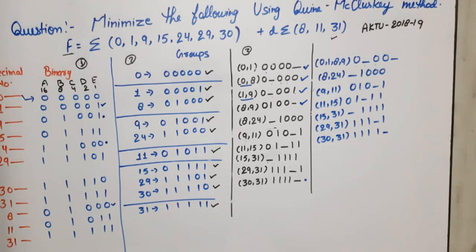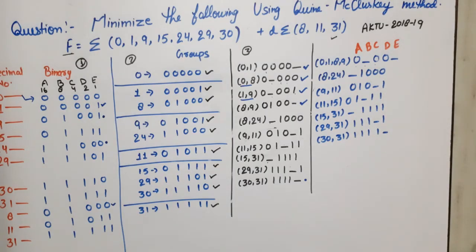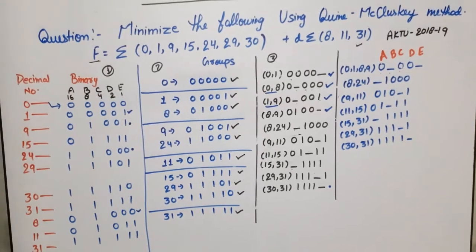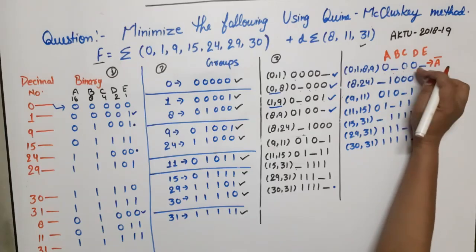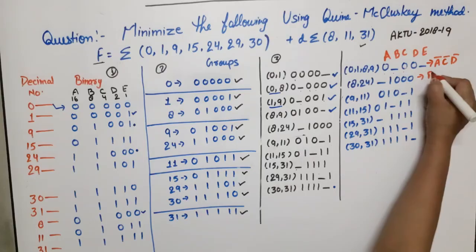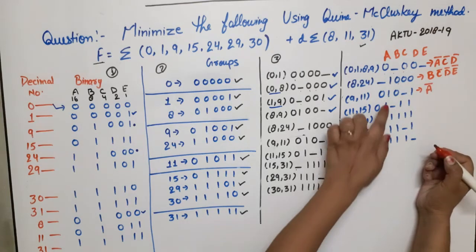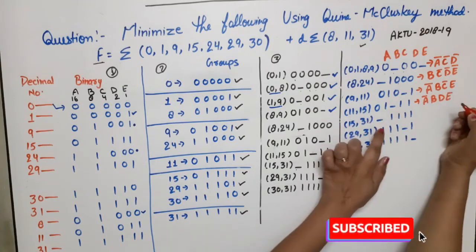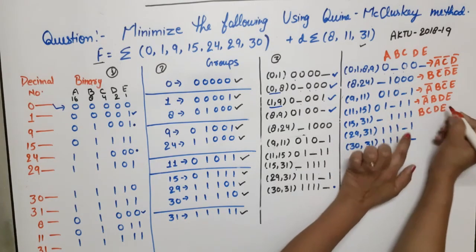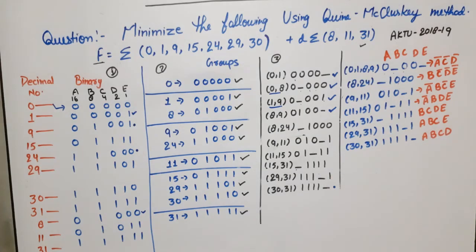Now we write the prime implicants in product term form using variables A, B, C, D, E. Where a bit is 0 → complemented variable; where there is a dash → variable is absent; where bit is 1 → direct variable. For 0,1,8,9 → 0-00-: A̅, B absent, C̅, D̅, E absent → A̅C̅D̅. For 8,24 → -1000: A absent, B, C̅, D̅, E̅ → BC̅D̅E̅. For 9,11 → 010-1: A̅, B, C̅, D absent, E → A̅BC̅E. For 11,15 → 01-11: A̅, B, C absent, D, E → A̅BDE. For 15,31 → -1111: A absent, B, C, D, E → BCDE. For 29,31 → 111-1: A, B, C, D absent, E → ABCE. For 30,31 → 1111-: A, B, C, D, E absent → ABCD. These are our prime implicants.